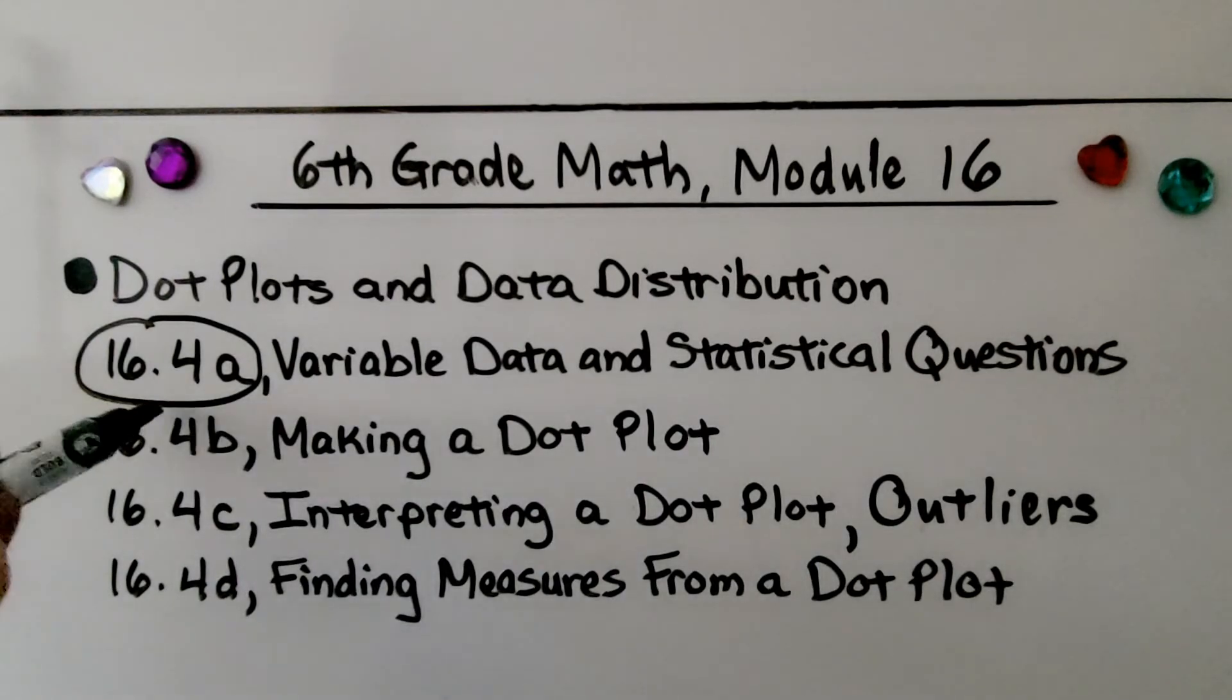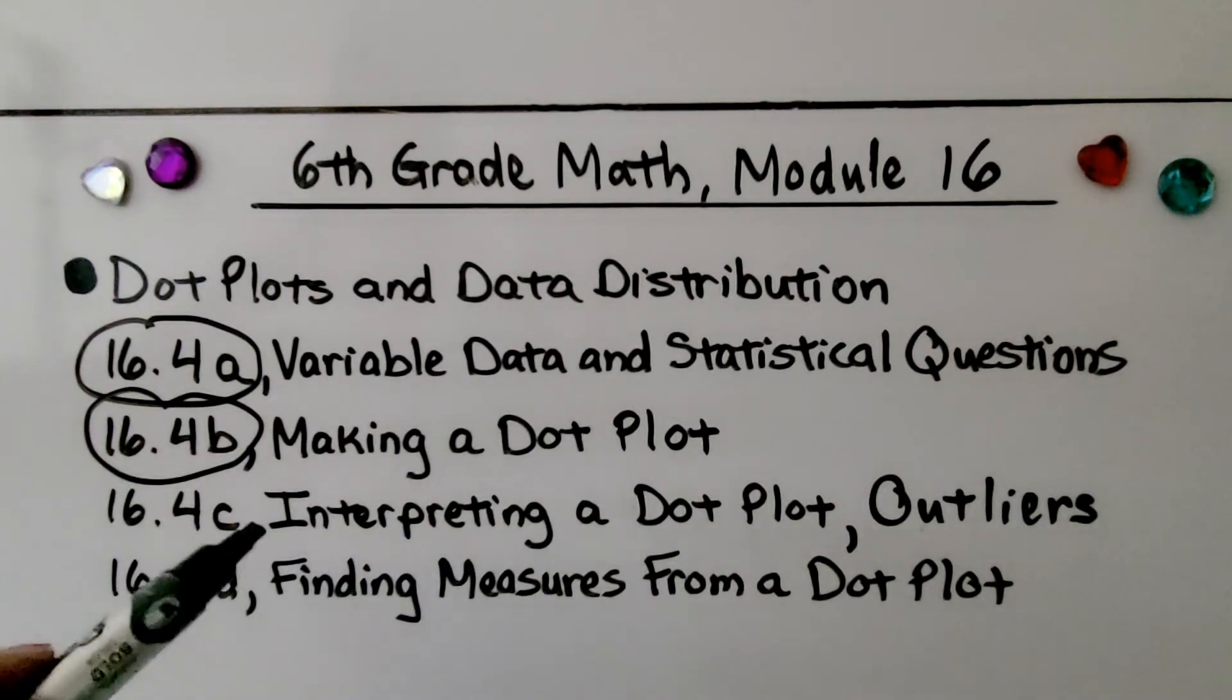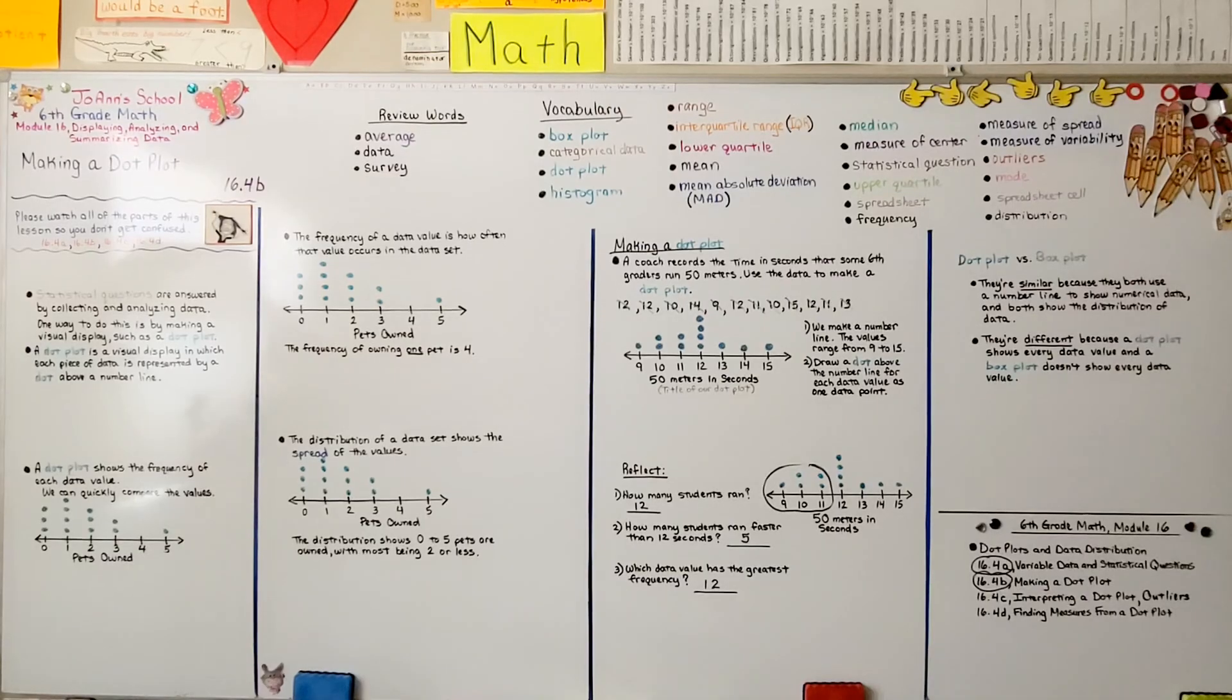We're finished with the second part of the lesson. We're going to move on to the third part, interpreting a dot plot. We're going to talk about outliers. Have a wonderful day and please join me for the third part of the lesson.